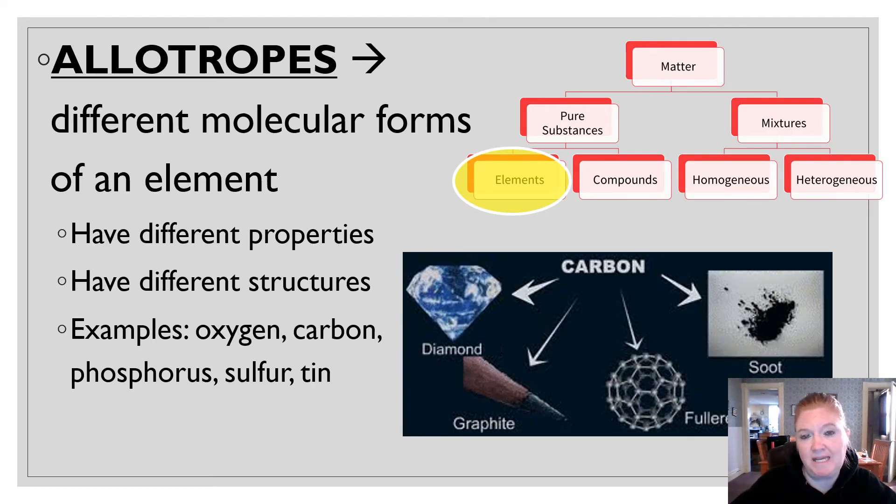Okay, now we get to allotropes, today's topic. So allotropes are different molecular forms of an element. And this may sound similar to a word that we've addressed before, which is isotopes. Isotopes are atoms of the same element that have the same number of protons, but different number of neutrons. Allotropes, on the other hand, have different properties. They have completely different structures, and those different structures give them different properties. This is something important to remember for later on. When elements have different structures, they have different properties.